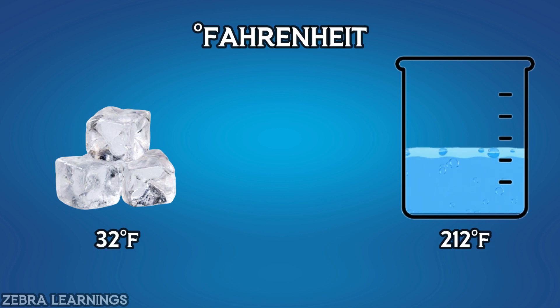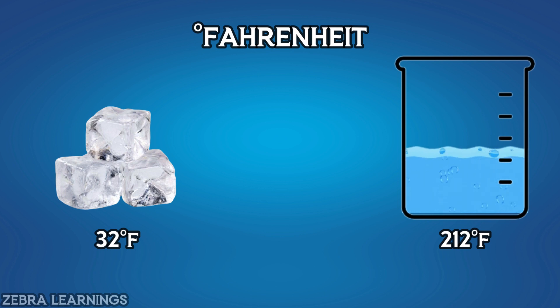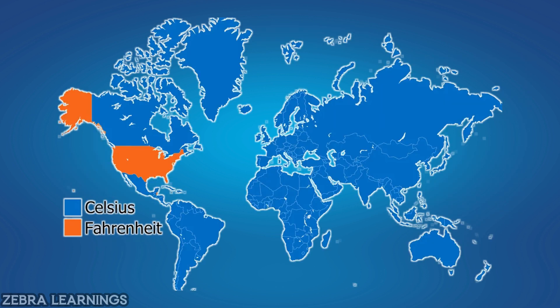The Fahrenheit unit is based on the freezing point of water at 32 degrees Fahrenheit and the boiling point at 212 degrees Fahrenheit. Degree Celsius is used in most parts of the world, while Fahrenheit is commonly used in the USA.